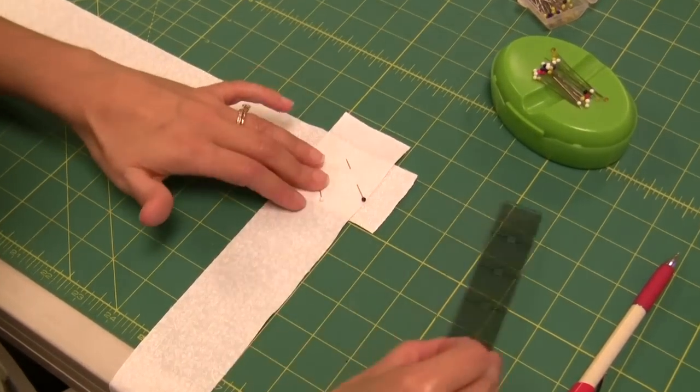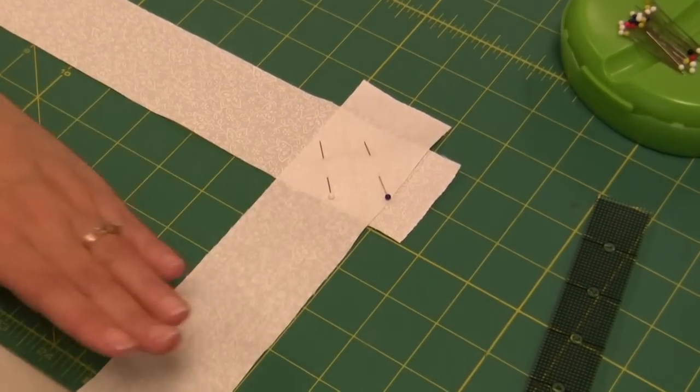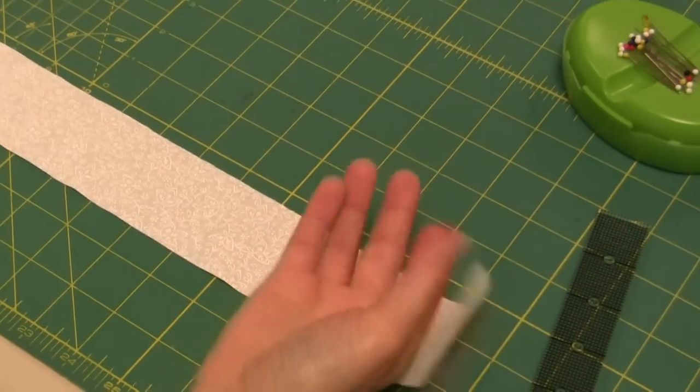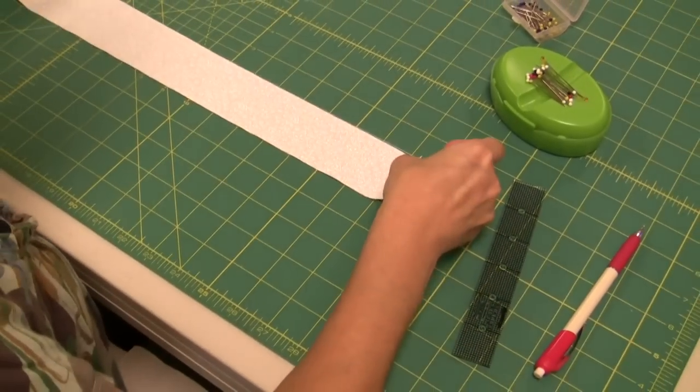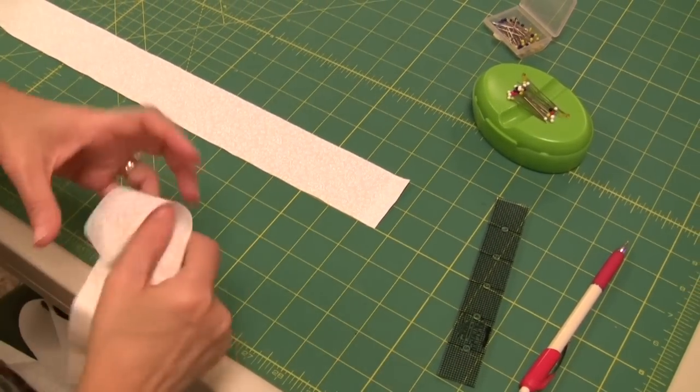Now if you have multiple strips, take your strip, flip it over, and now this strip becomes your horizontal, and your new strip becomes your vertical.